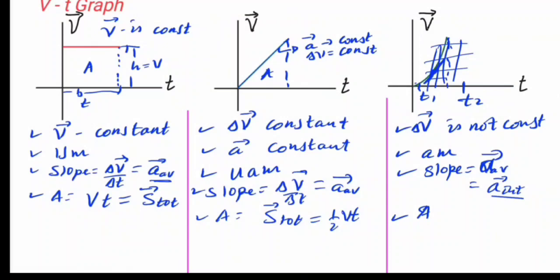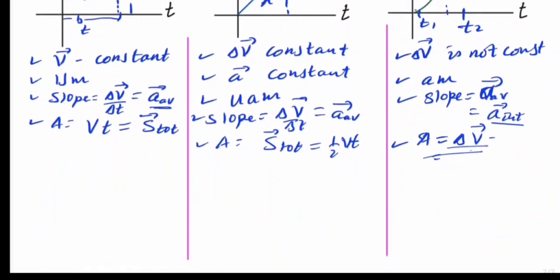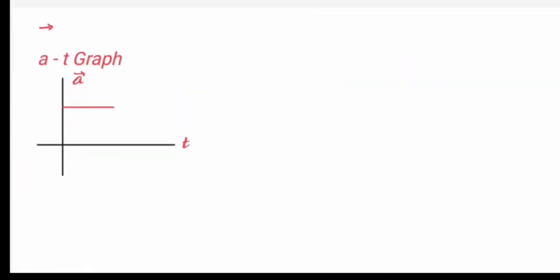The area under the v-t graph can be calculated. We can use integration or approximate using rectangles and triangles. The area gives us the total displacement. For a triangular region, the area is one-half times base times height, where height is velocity and base is time, giving one-half times v times t.